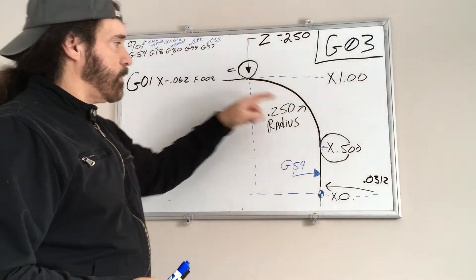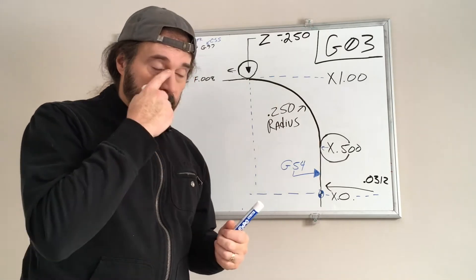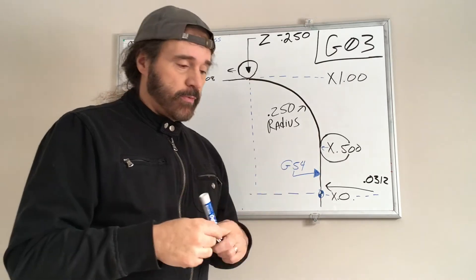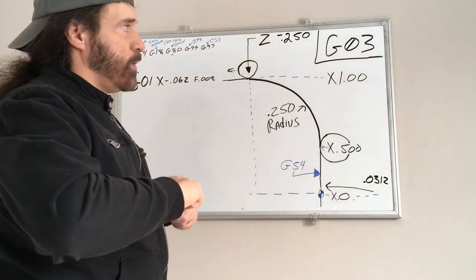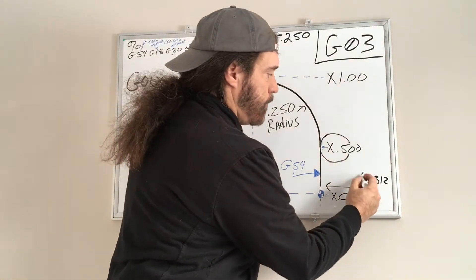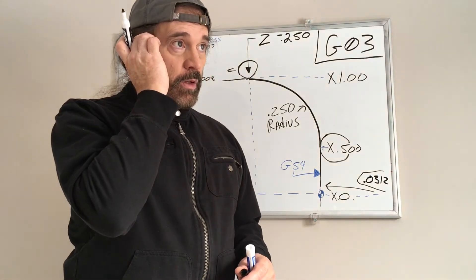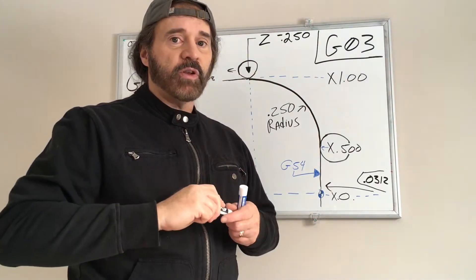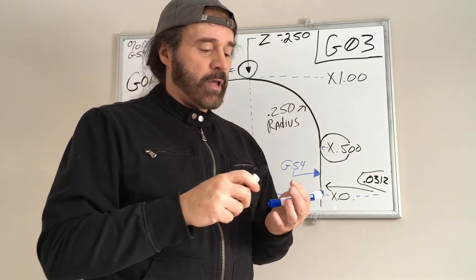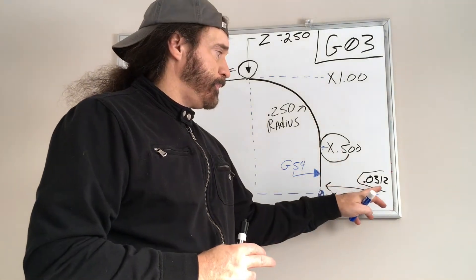I'm just going to start from facing and go from there. And this video is mainly meant for beginners and I hope it helps. We'll find out. So let's say we have a radius bit of 0.0312.